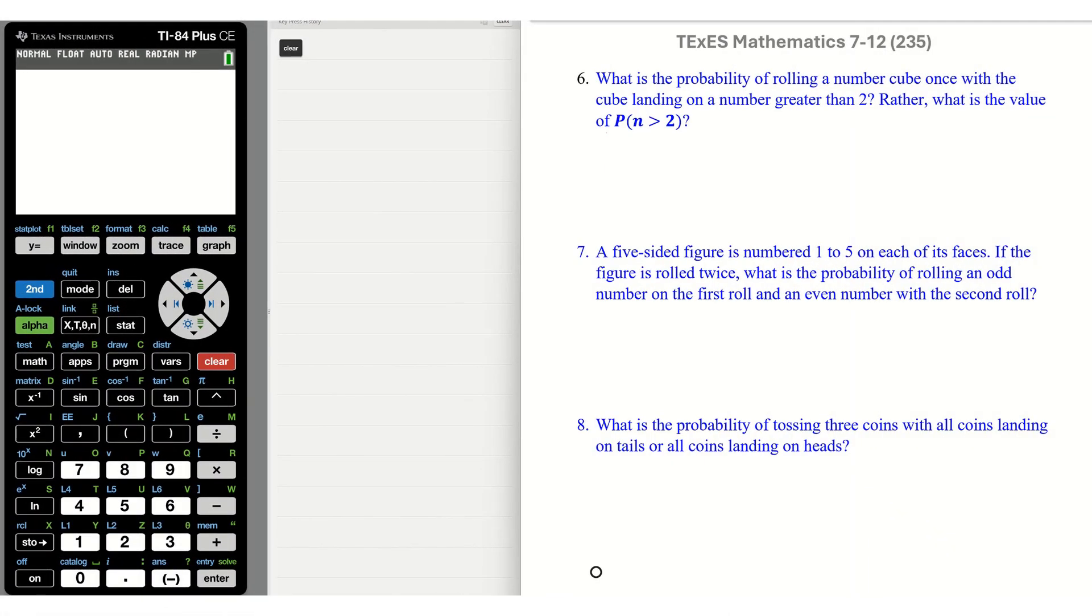Number six. What is the probability of rolling the number cube once with the cube landing on a number greater than two? Rather, that would be P probability with n greater than two. Okay, let's write this down. We know we have—sorry, we're using a standard number cube. So that's six. Okay, let's see. Two, three, four, five, six. That's four.